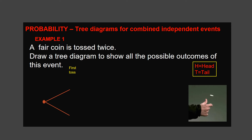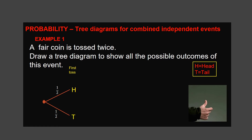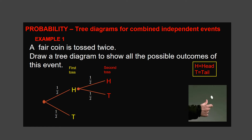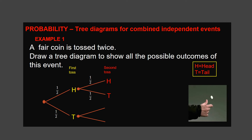The probability of getting each outcome is 1 over 2. Write the probability of each outcome on each branch. For the second toss, assume we got head in the first toss — we might get head or tail in the second toss. Draw a double branch, label two ends, and write the probability of each outcome on its branch. Similarly, if we got tail in the first toss, we might get head or tail. Draw a double branch, label two ends, and write the probability of each outcome on its branch.